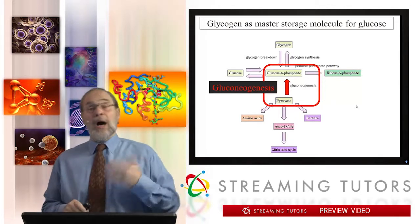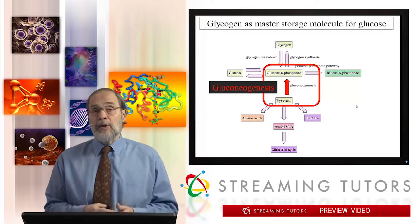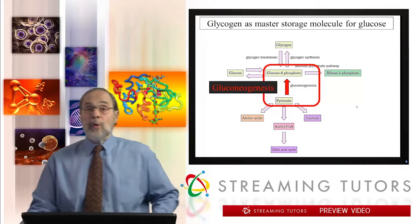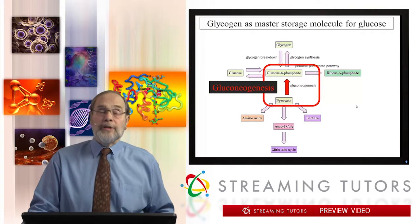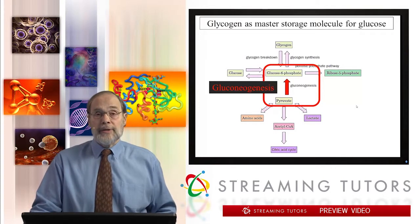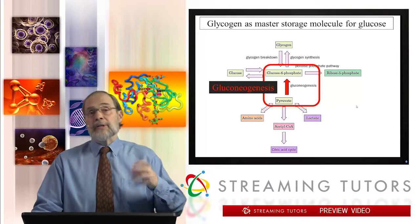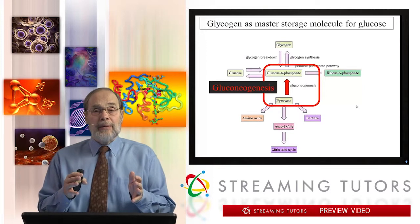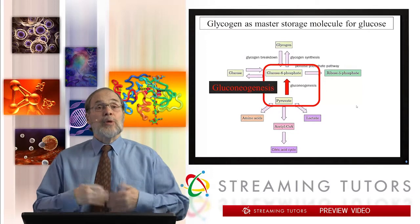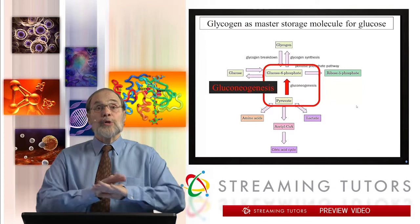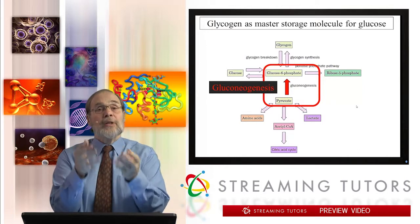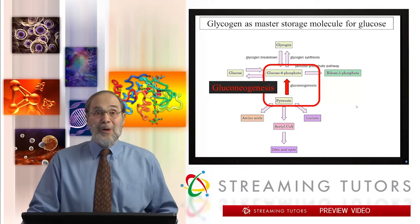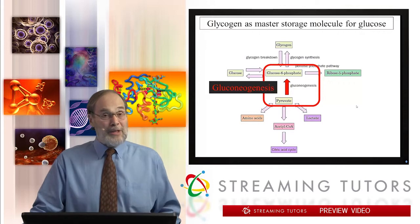If glucose levels get too high, it perturbs function of various organs, including the brain — you can go into a seizure. And if glucose levels drop too low, the same thing can happen; you can go into a hypoglycemic coma. We'll talk in later topics about diabetes and the control of blood sugar, but today we're putting the last pieces in place to understand glucose homeostasis. Most cells need a constantly available level of glucose — not too high, not too low — what we can call the Goldilocks Principle of Glucose Regulation.